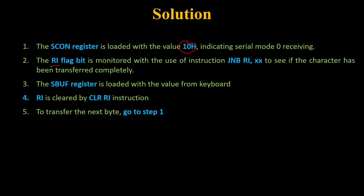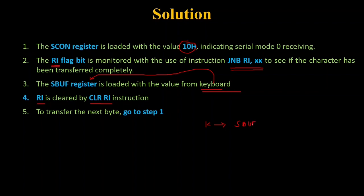Since we are receiving data, we have to concentrate on the RI flag — the receive interrupt flag — for monitoring and verifying whether receiving is completed. Whatever value I type on the keyboard should reach the SBUF register. After that I have to clear the RI flag using the CLR RI instruction, then move back to step 1. Whatever key I press will move into the SBUF register, and from SBUF we can move it into the 8051.